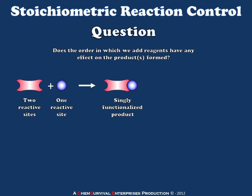If we have another one of these blue singly-reactive molecules around, we can anticipate that it will react with our intermediate, forming a final product in which there are two reactive sites attached.